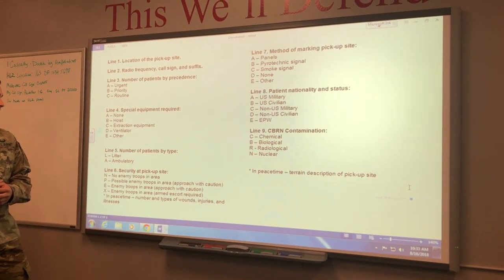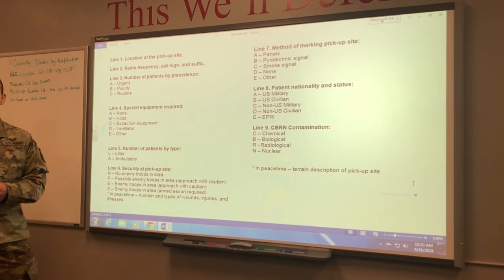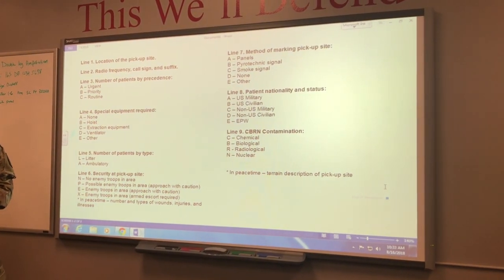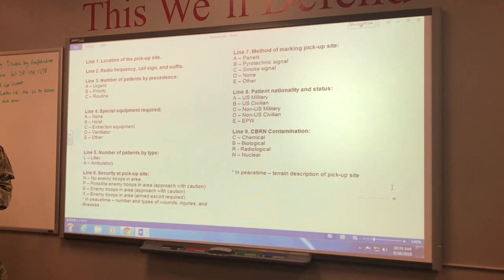Line five is your number of patients by type. Lima litter means they're going to be carried on litter and can't walk. Alpha is ambulatory, means they can walk.